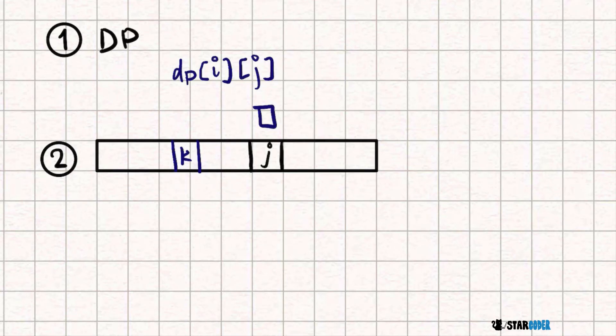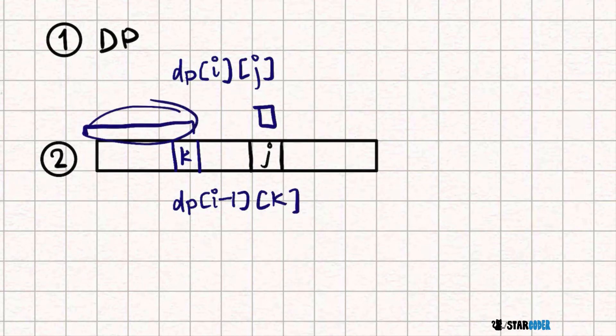The value DP[i][j] is the minimum of itself and DP[i-1][k], which is the cost and distance traveled to K plus the distance from K to J.